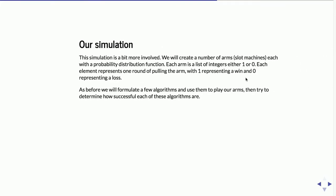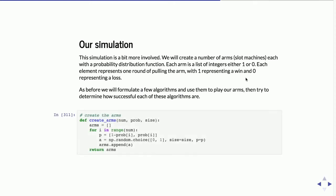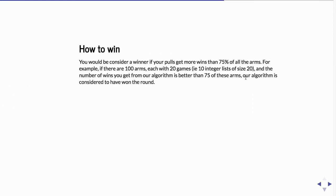The simulation is a bit more involved. We create a number of arms — slot machines — each with a probability distribution. Each arm is a list of integers, either one or zero: one representing a win, zero representing a loss. We run through a number of iterations and determine how successful each arm is. How do you consider a person to have won? You must have some criteria for winning. The obvious one: with 100 arms, the one with the largest number of wins is the winner. If you choose that arm, you won.